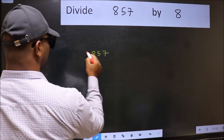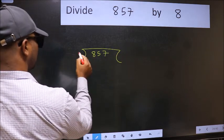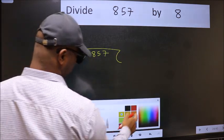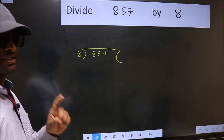857 here and 8 here. This is your step 1.